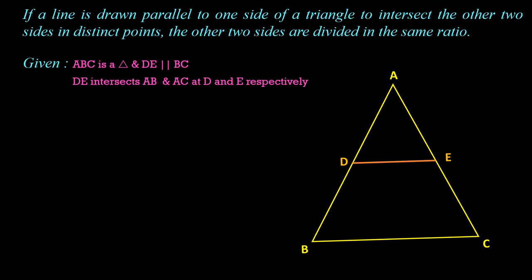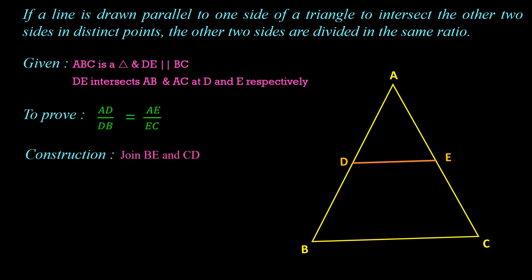This is the given part of the theorem. We have to prove that AD/DB = AE/EC. To prove this, we will use areas of triangles with these as bases. We have trapezium BCDE; to get the needed triangles, I am joining B to E and C to D, giving us triangle BDE and triangle DEC.